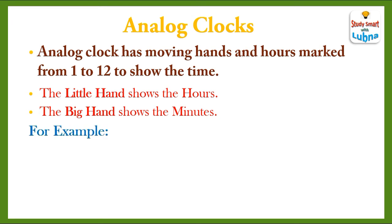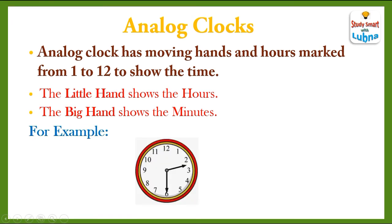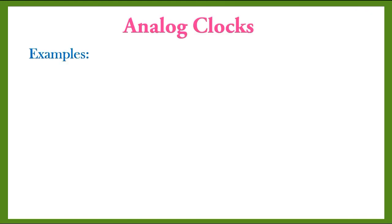For example, this is an example of an analog clock. Here the numbers 1 to 12 are written, and it has a little hand that shows the hours and a big hand that shows the minutes. So, what time is it in this analog clock? Right now it's 2:30 or half past 2.